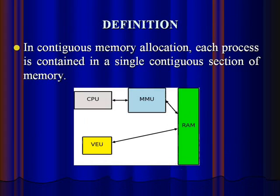Contiguous Memory Allocation — Definition. In Contiguous Memory Allocation, each process is contained in a single contiguous section of memory.